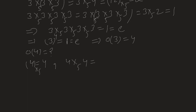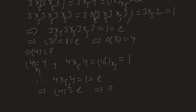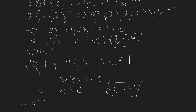Next, find the order of 4. 4 under multiplication modulo 5 gives 4. 4 squared: 4 times 4 is 16, divided by 5 remainder is 1. Since 4 squared gives 1, the identity element, this implies the order of 4 is equal to 2.